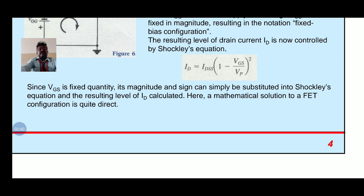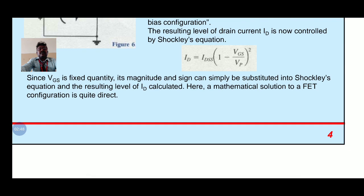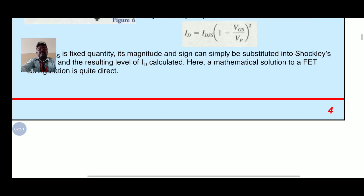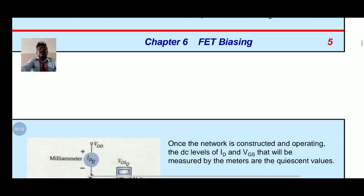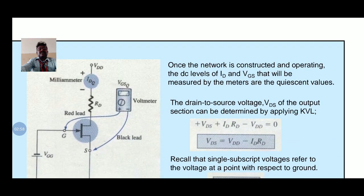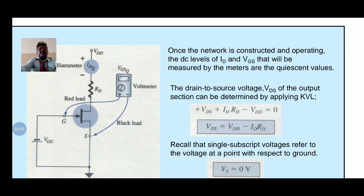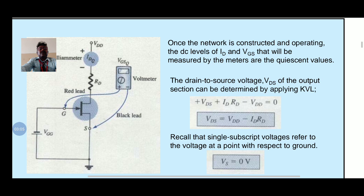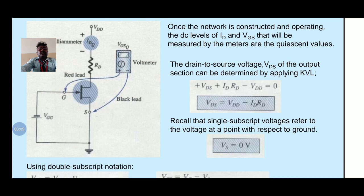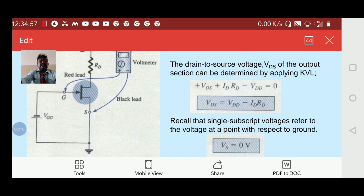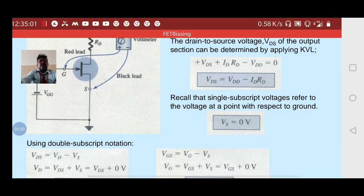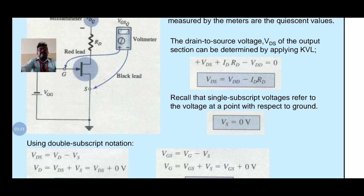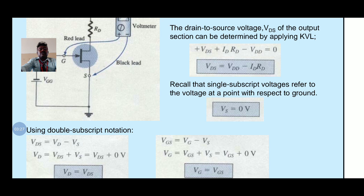Since VGS is a fixed quantity, its magnitude and sign can simply be substituted into Shockley's equation and the resulting level of ID calculated. The mathematical solution to the fixed bias configuration is quite direct. Once the network is constructed and operating, the DC levels of ID, VDS, and VGS will be measured. The drain to source voltage VDS can be determined by applying Kirchhoff's voltage law: VDS plus ID into RD minus VDD equal to 0, so VDS equal to VDD minus ID into RD. The single subscript voltage VS is equal to 0.